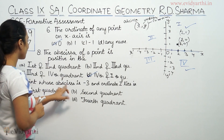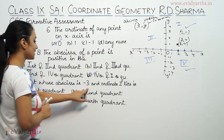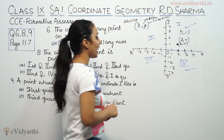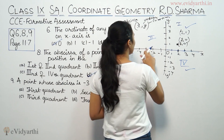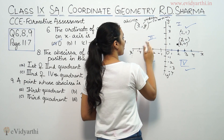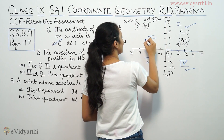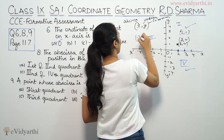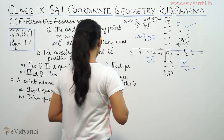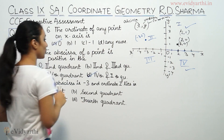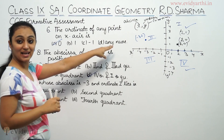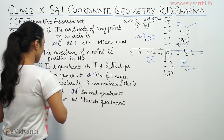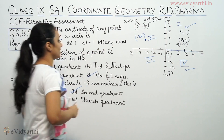A point whose abscissa is minus 3 and ordinate is 2. Abscissa minus 3 means x equals minus 3, and ordinate 2 means y equals 2. So the point is (-3, 2), which lies in the 2nd quadrant.